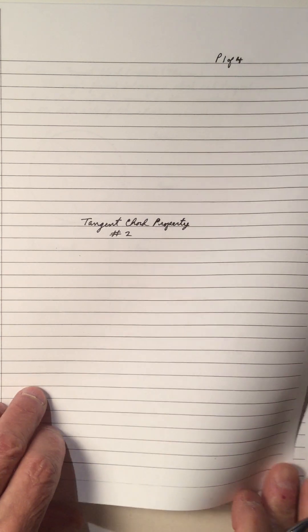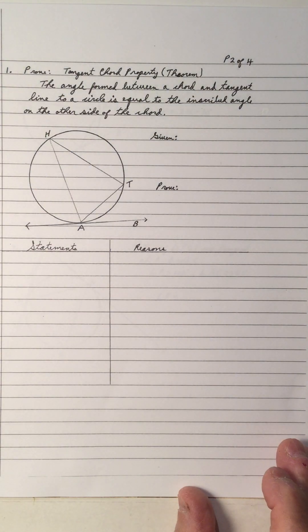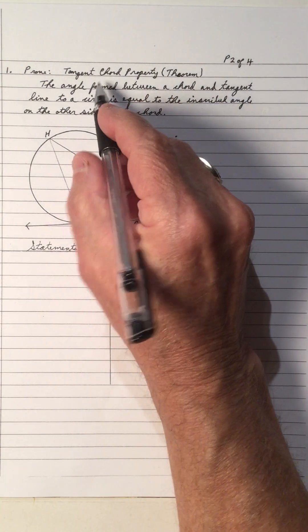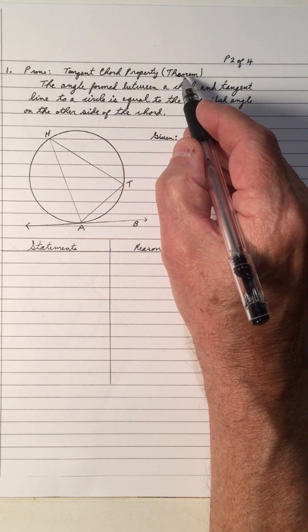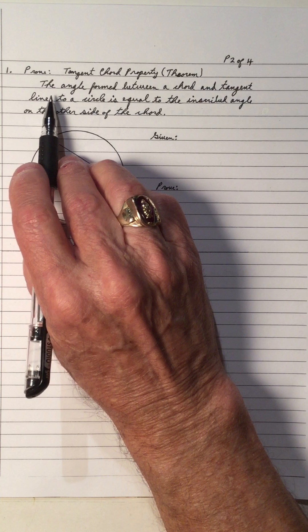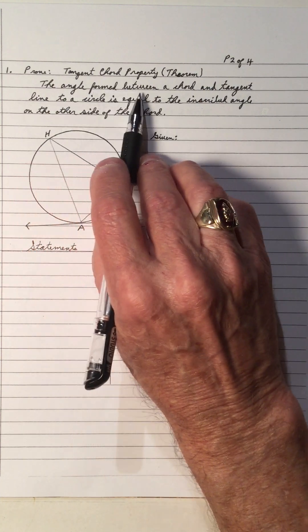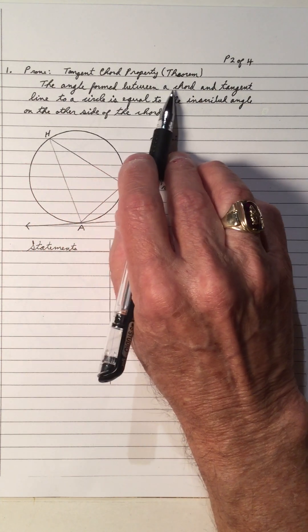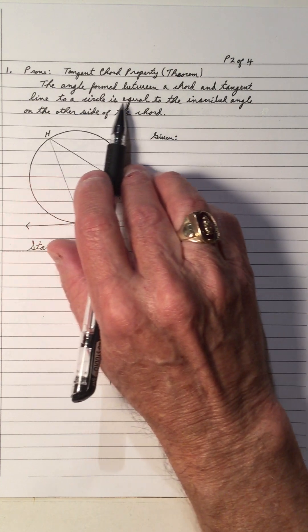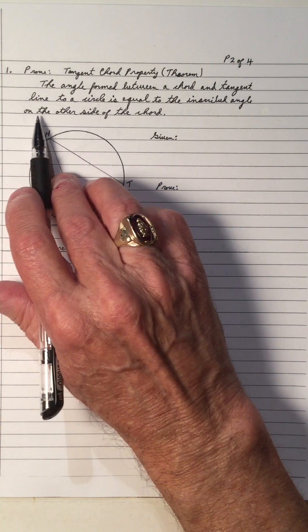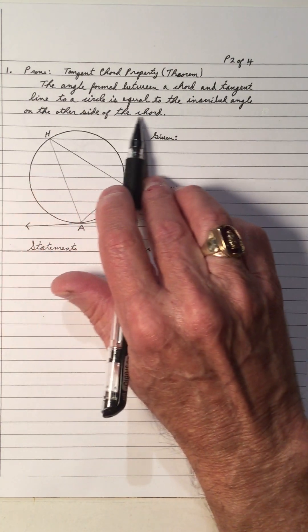Welcome to my video on tangent chord property number two. We will prove the tangent chord property, and because we prove it, we can call it a theorem. The angle formed between the chord and the tangent line to a circle equals the inscribed angle on the other side of the chord.